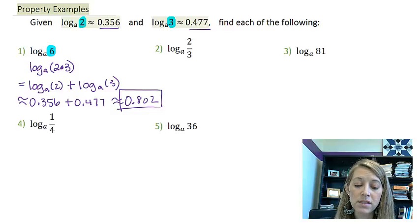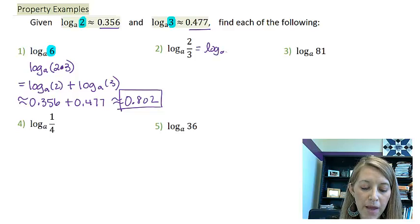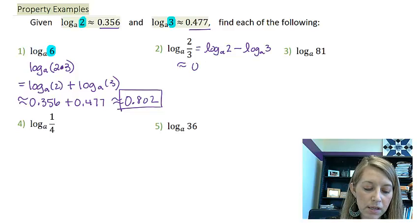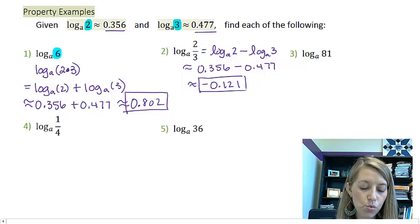Okay, hopefully you find that number 2 was really easy, because it's just using the quotient property. This is going to be log base A of 2 minus log base A of 3. And so that is approximately 0.356 minus 0.477. And so that is approximately negative 0.121. So 2 follows really close from example 1.